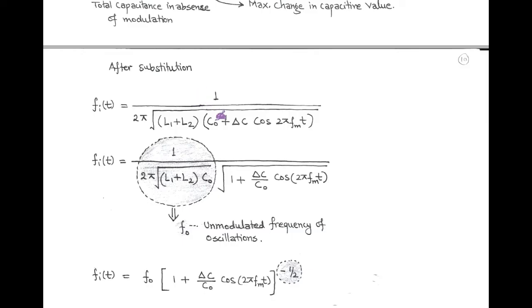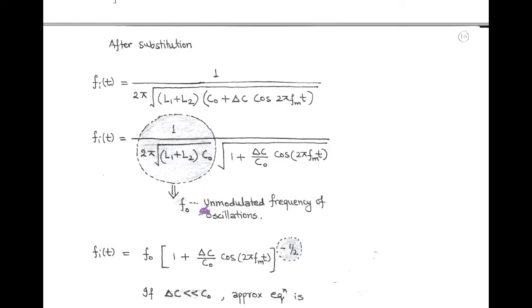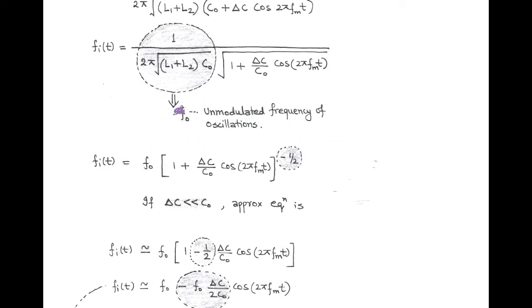Taking C₀ outside the bracket, we get 1 upon 2π times the square root of (L1 + L2) into C₀, multiplied by the square root of (1 + (ΔC / C₀) cos(2π fm t)). Here, 1 upon 2π times the square root of (L1 + L2) into C₀ is called the unmodulated frequency of oscillation, denoted by F₀. The expression becomes: instantaneous frequency equals F₀ times (1 + (ΔC / C₀) cos(2π fm t)) to the power of minus 1/2, since the square root moves from denominator to numerator.